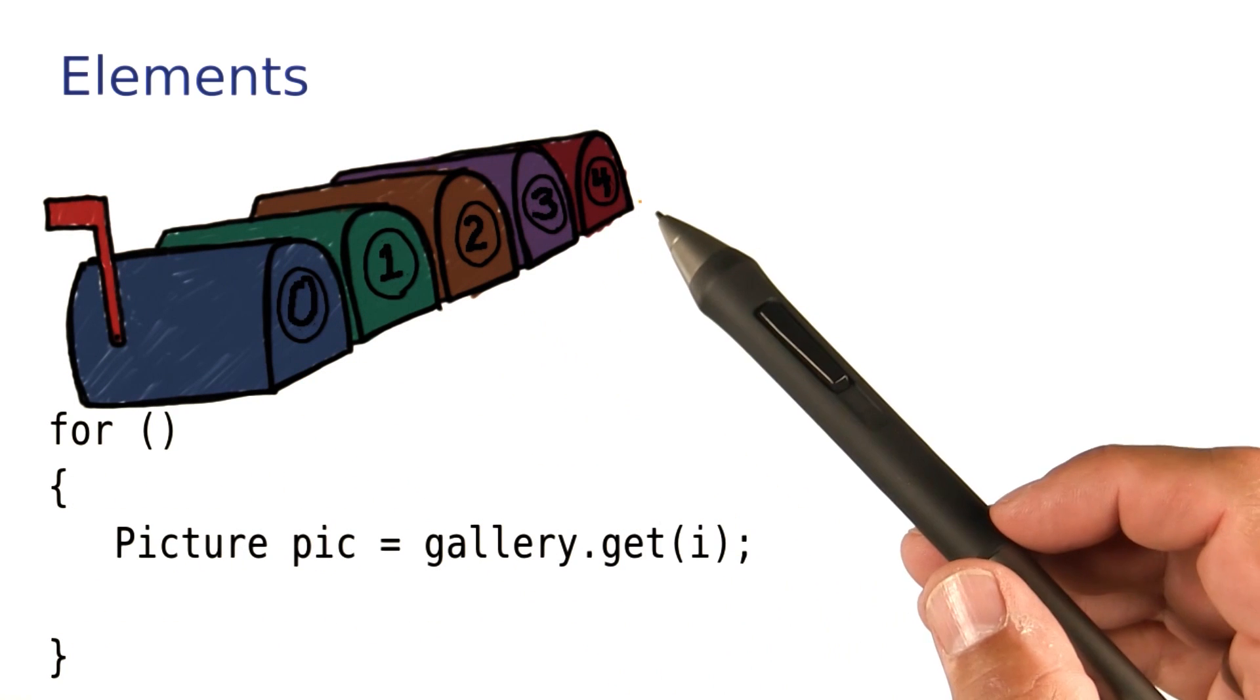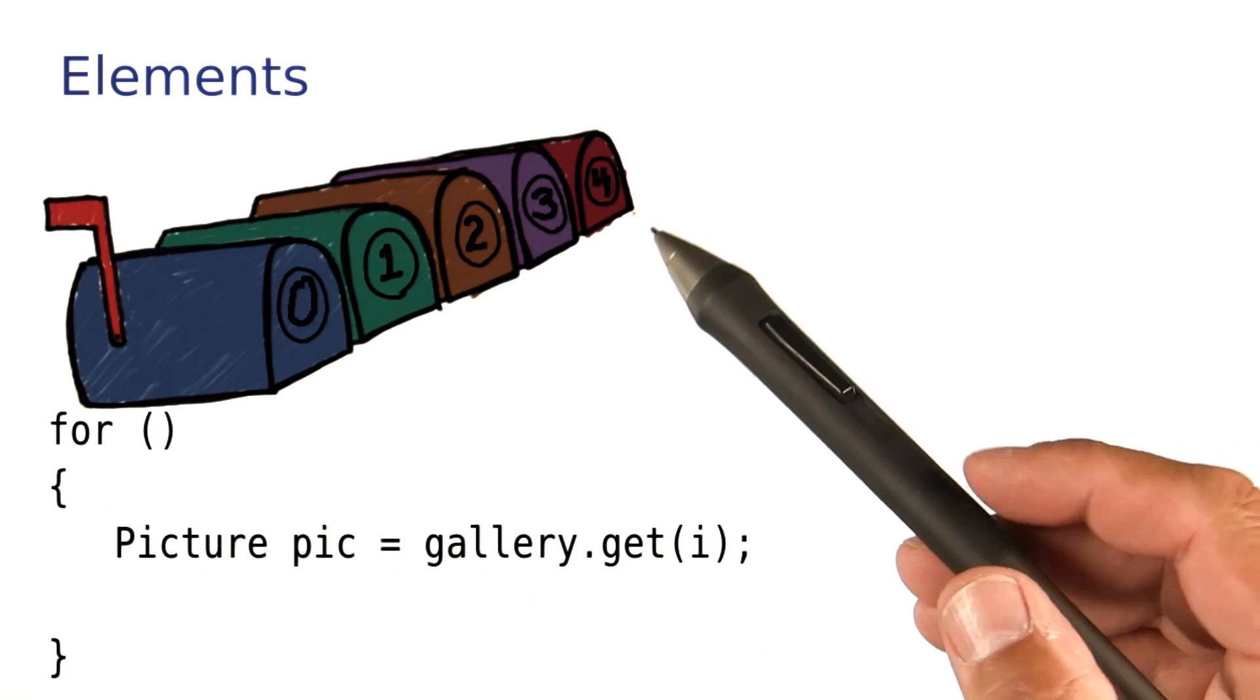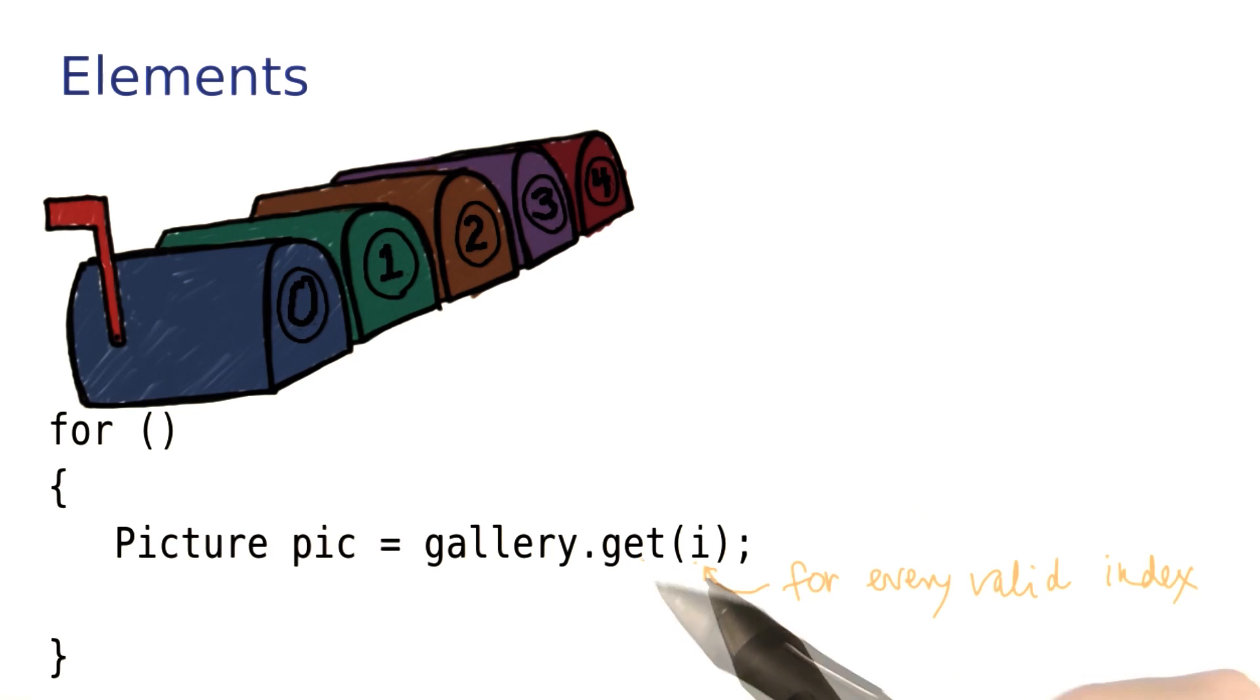In order to work with every element in an ArrayList, you want to call the get method for every valid index. That means 0, 1, 2, and so on, up to the size minus 1.